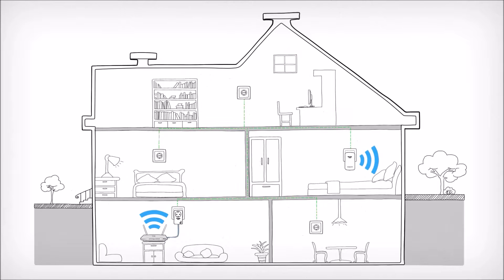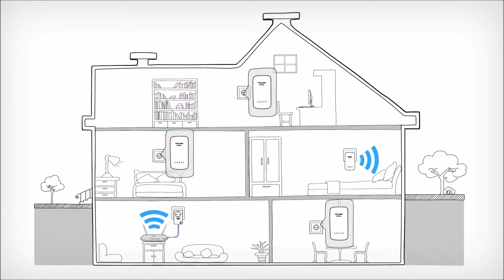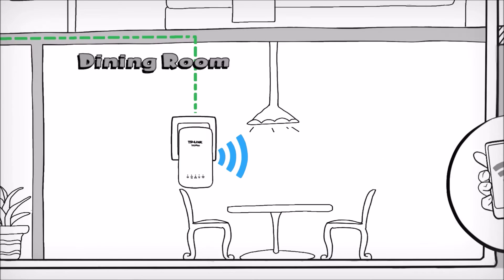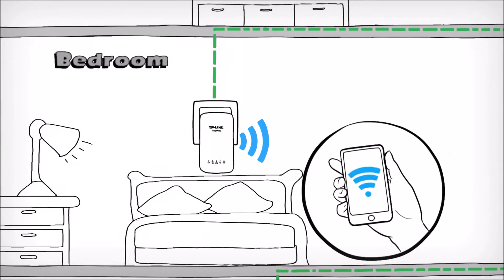You can also add more extenders to your existing Powerline network to get coverage anywhere your primary router's signal does not reach. Your house can be totally connected and you can enjoy strong reception and seamless coverage anywhere there is a power outlet.